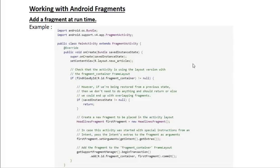Here is an example of how to add a fragment at runtime. This is a simple activity that extends FragmentActivity. First, we check whether the container is available in the activity's layout file using the findViewById method. If it is not null, we can add the fragment to the container. Another important check: we must verify whether the savedInstanceState is null or not. If the activity is being restored from a previous state, we don't need to do anything and should return, otherwise we could end up with overlapping fragments. If the activity is resumed, the fragment is already added, so we don't need to add it again.